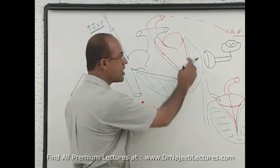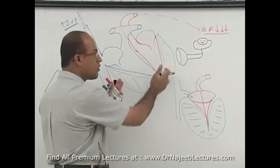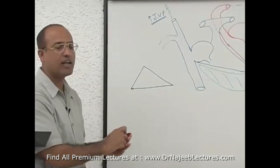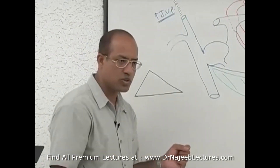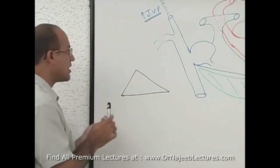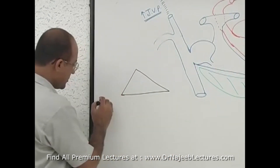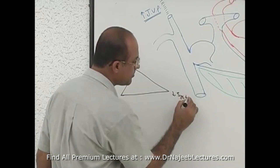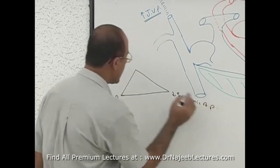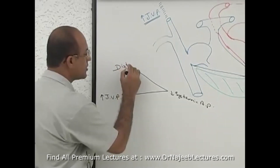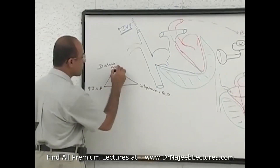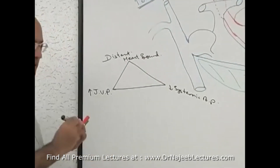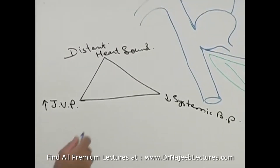If the rapid accumulation does not give enough time for the outer layer of pericardium to stretch out, then fluid compresses the ventricles and atria, and diastolic filling of both sides of the heart is reduced. The features are: rising JVP — jugular venous pressure — falling systemic blood pressure, and distant or muffled heart sound.